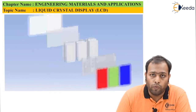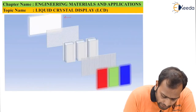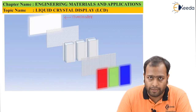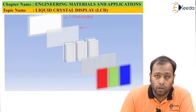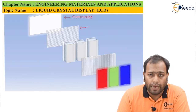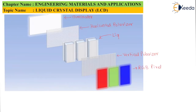This is an entire set of layers which is driving behind an LCD display. This is called the illuminator — its role is to just give white light. This is the horizontal polarizer. A polarizer is a device which allows light to pass through it in a given orientation. We also have the vertical polarizer. And this is the RGB pixel.